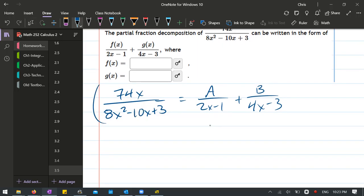Alright, so what do we do first? You always multiply by the product of the denominators. Now these two multiply to make that right there. So therefore, multiplying by the product is going to completely cancel the numerator on the left side. 74x equals A times 4x minus 3 plus B times 2x minus 1.